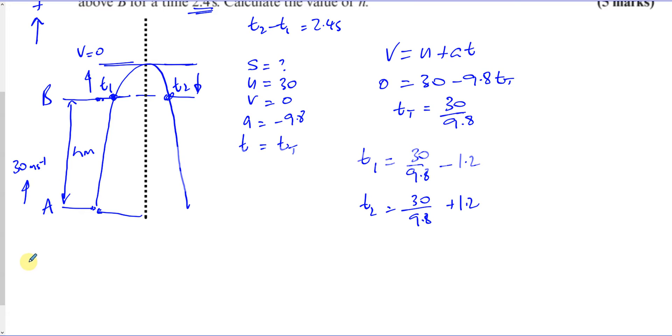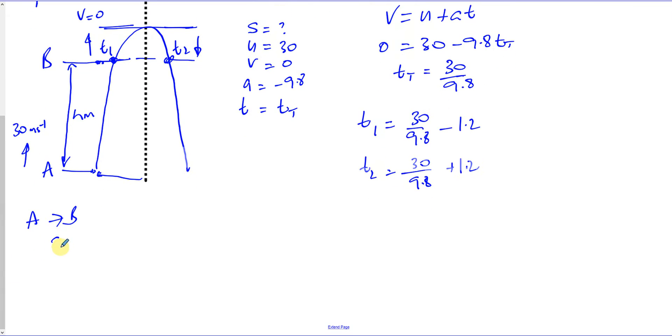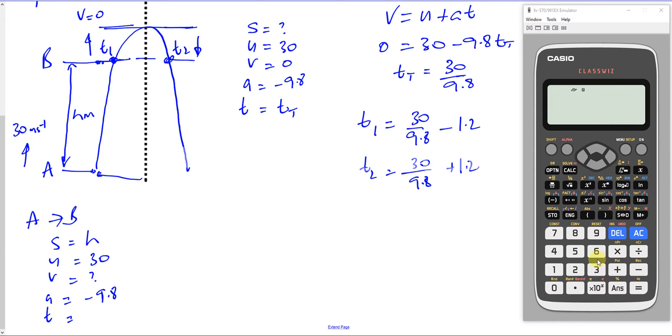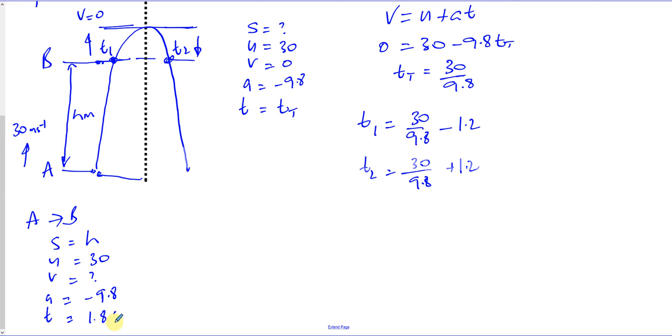So we can now take from A to B and we're going to deal with SUVAT from A to B. So I know S is H, U is 30, V is, we don't know, A is minus 9.8, freely under gravity, and T, I can take 30 over 9.8 minus 1.2. That gives me 1.861 seconds.